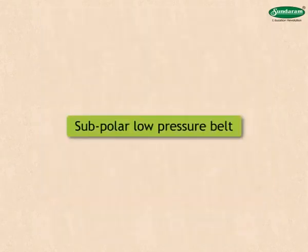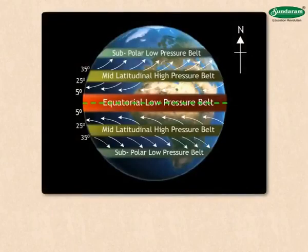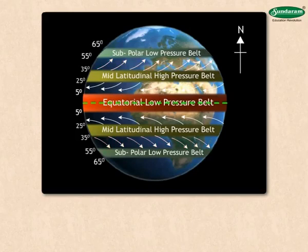Subpolar low pressure belt. Air in the subpolar region gets pushed upward due to friction with the surface and the earth's rotation. This effect is seen between 55 degrees and 65 degrees latitudes in the northern and southern hemispheres. As a result, a low pressure belt is formed in this area near the surface.